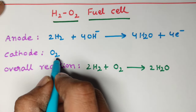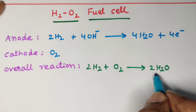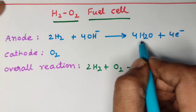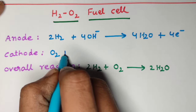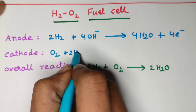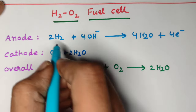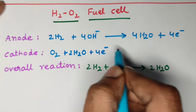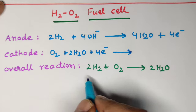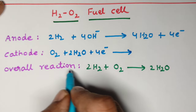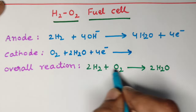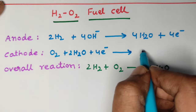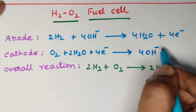Now let us come to the cathode reaction. In the overall reaction, two moles of water appear on the right side, but at the anode we wrote four moles, so we cancel two water molecules by writing two moles of water on the left side. At the anode it loses four electrons, so at the cathode it gains those four electrons. Since there are no OH⁻ ions in the overall reaction, the four OH⁻ ions must be cancelled, so we write four moles of OH⁻ ions on the right side.